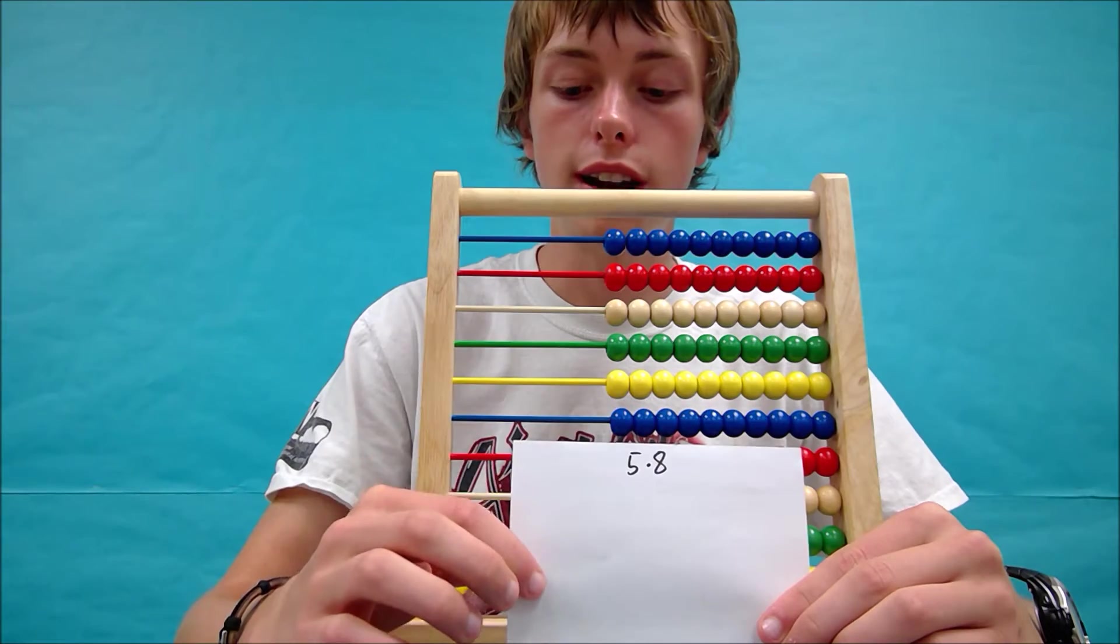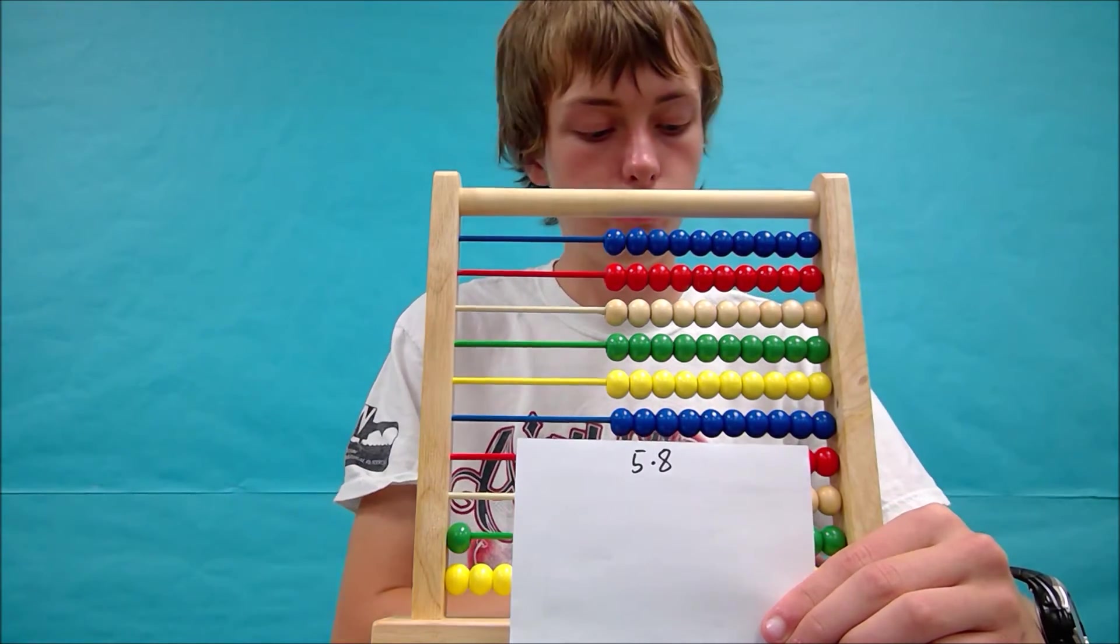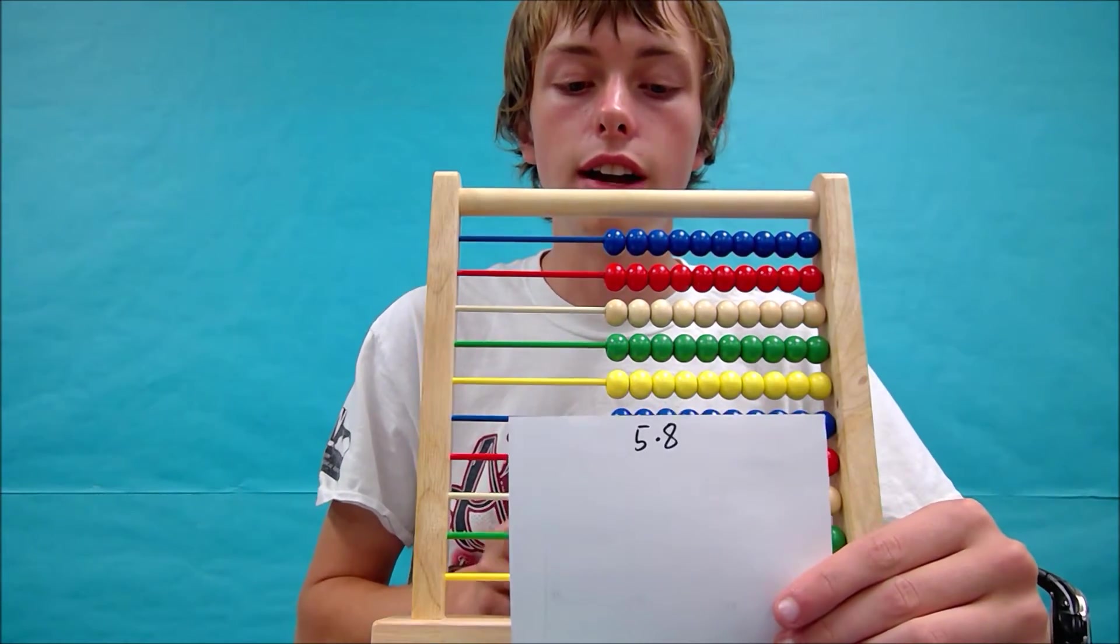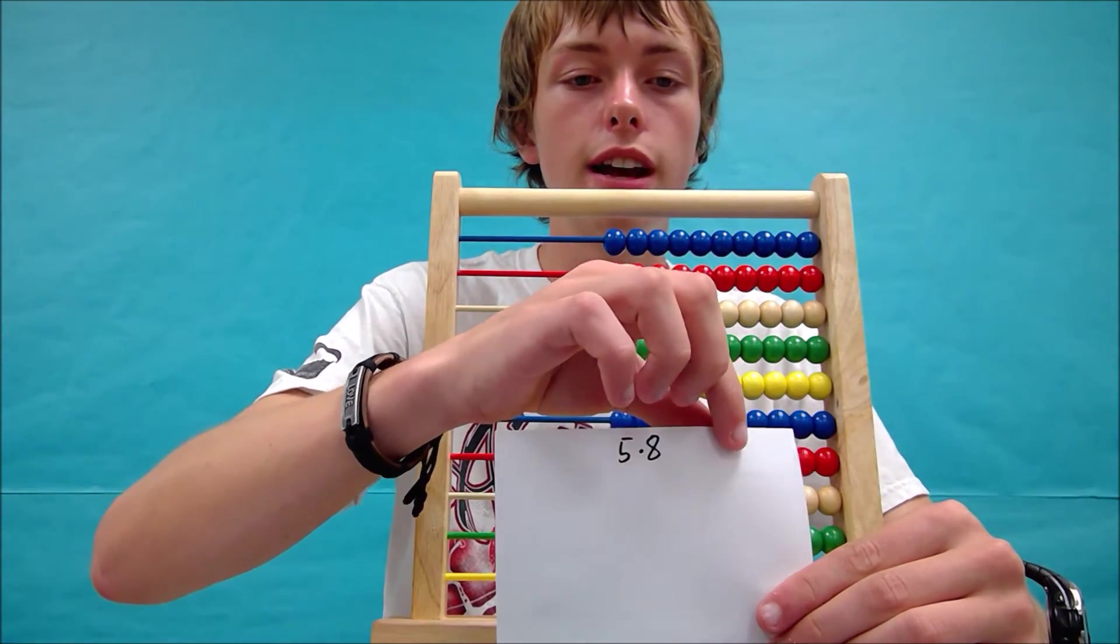This will be where any 10s for the second row, if I have to remember any numbers from this side to move 10s up. And on this side, I'll keep tally for 8.